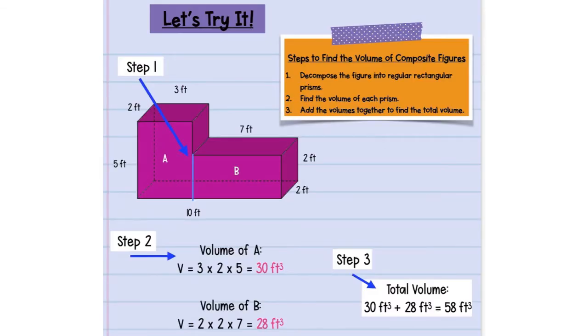Let's look at an example. This is a composite figure because you can see there are two rectangular prisms. Step one is to break apart the composite figure to decompose them. Then we're going to find the volume of each. A great way to do that is by labeling it A and B.